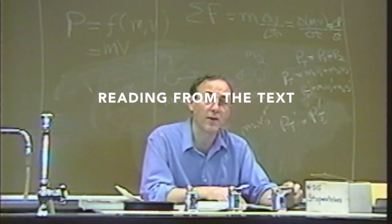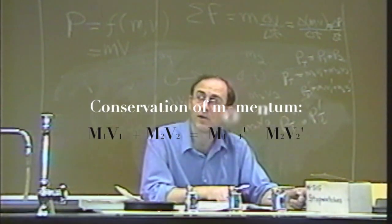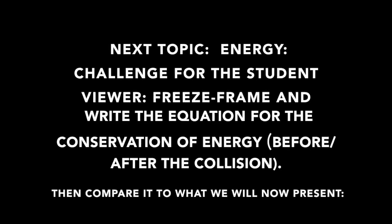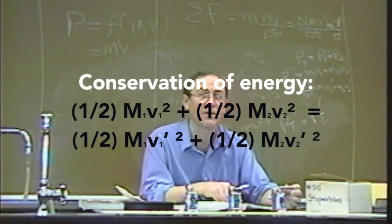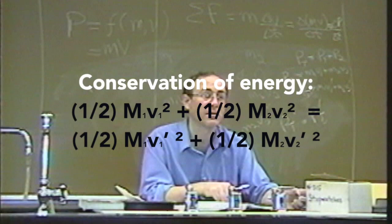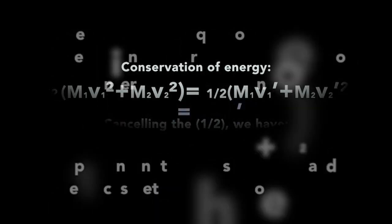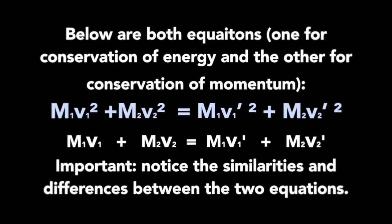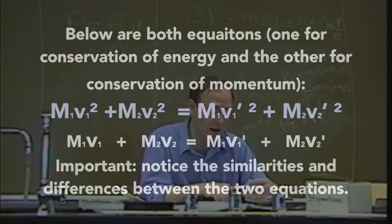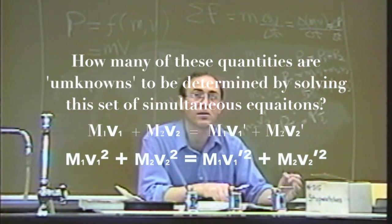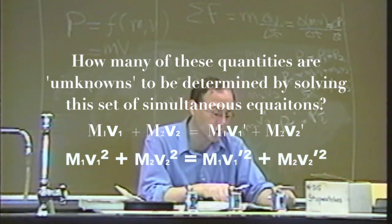What's the total momentum after the collision? From conservation of momentum, we write down the momentum conservation law - exactly what we wrote down before. From conservation of energy, we write down exactly what we said. Now how many unknowns do we have? Assuming the masses m1 and m2 are known constants - they're not the dynamic things we want to figure out - how many unknowns are there?